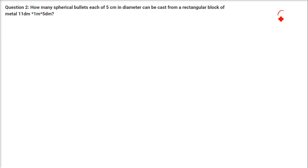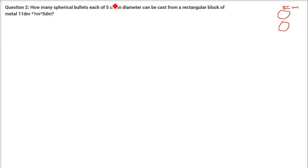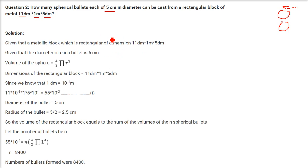Question 2: How many spherical bullets each of 5 cm in diameter can be cast from a rectangular block of metal? The metal block has given length, breadth, and height. One important thing to note here is that the dimensions are in different units — centimeter, decimeter, and meter — so we have to convert all of them into the same unit.